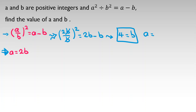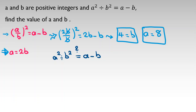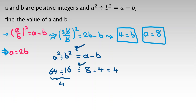So b equals 4, and since a equals 2b, a equals 2 times 4 which is 8. Let's verify: a squared over b squared equals 64 over 16 equals 4, and a minus b equals 8 minus 4 equals 4. It checks out — both sides equal 4, confirming our solution is correct.